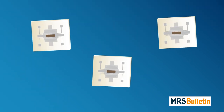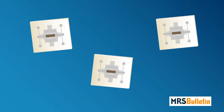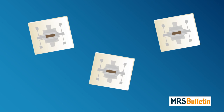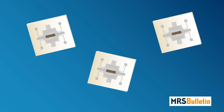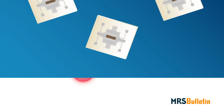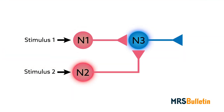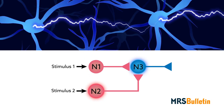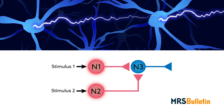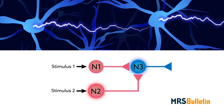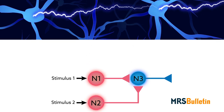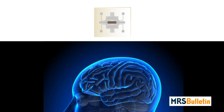As currently constructed, artificial neurons and synapses like these bear little to no physical resemblance to the real thing. But they are proving increasingly capable of carrying out the same functions. Ultimately, this type of circuitry could hold the same promise for neuroscience and artificial intelligence as homegrown organs do for medicine — the ability to explore important research questions in the lab, all thanks to quantum materials.